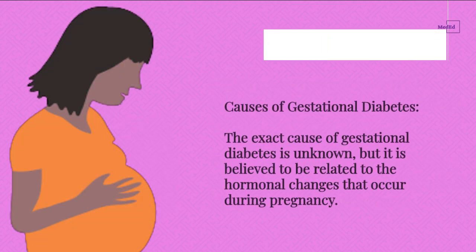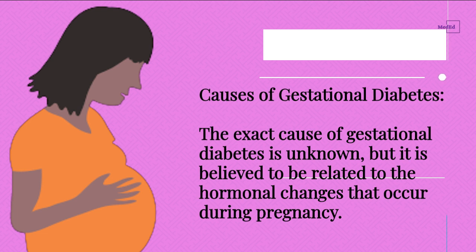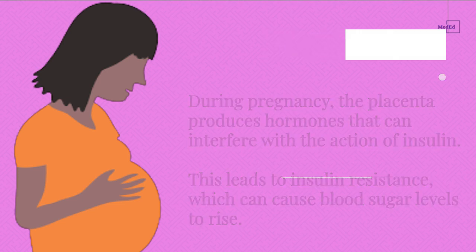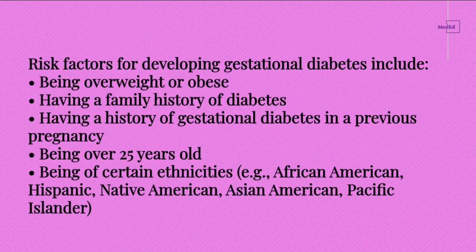Causes of Gestational Diabetes. The exact cause of gestational diabetes is unknown, but it is believed to be related to the hormonal changes that occur during pregnancy. During pregnancy, the placenta produces hormones that can interfere with the action of insulin. This leads to insulin resistance, which can cause blood sugar levels to rise.